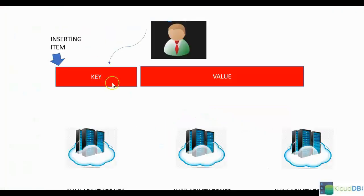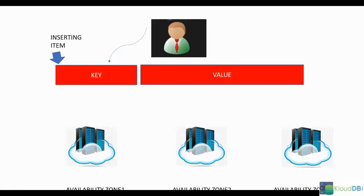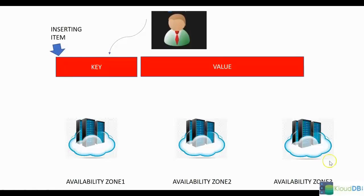In this lecture, we're going to see the different consistency models in DynamoDB. So what happens when you insert an item into DynamoDB? An item in DynamoDB is nothing but a key-value pair, as we have seen before. Once you insert the key-value pair, or an item, into DynamoDB, it reaches three data centers, or three availability zones.